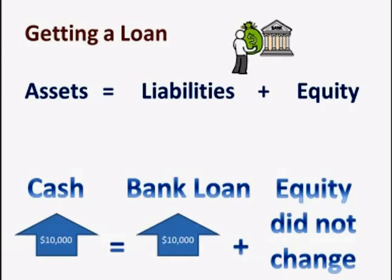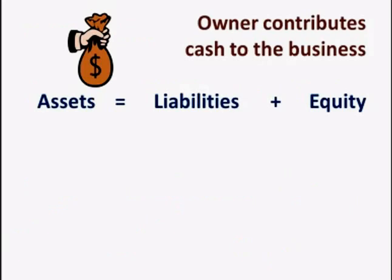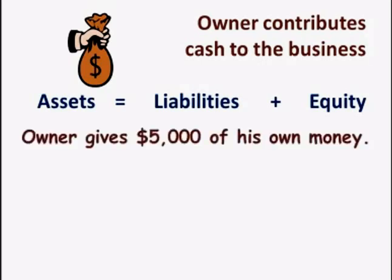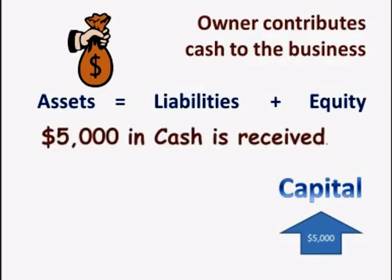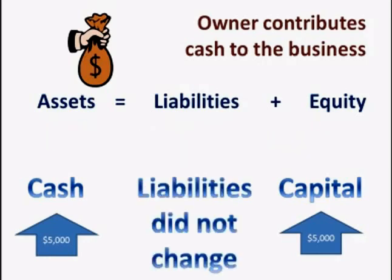Let's take another example. Many owners put money from their own pockets into their businesses, such as when a business gets started. Let's say an owner contributes $5,000 from his own personal bank account and deposits it into his business's bank account. Owner capital is an equity account, so equity increased by $5,000. $5,000 of cash is received, so assets increase by $5,000. Liabilities are not affected in this transaction, and our accounting equation balances.